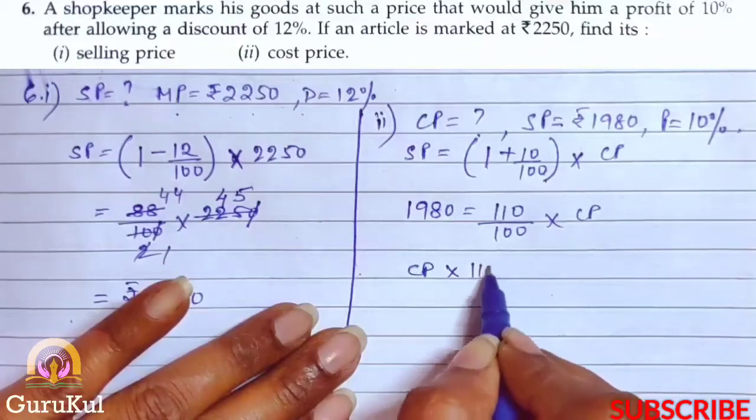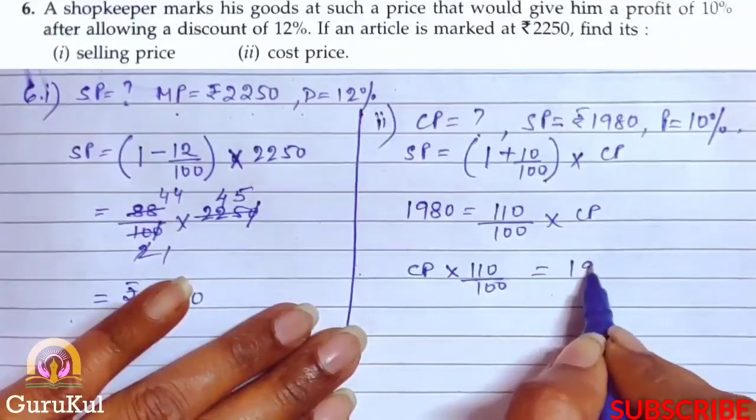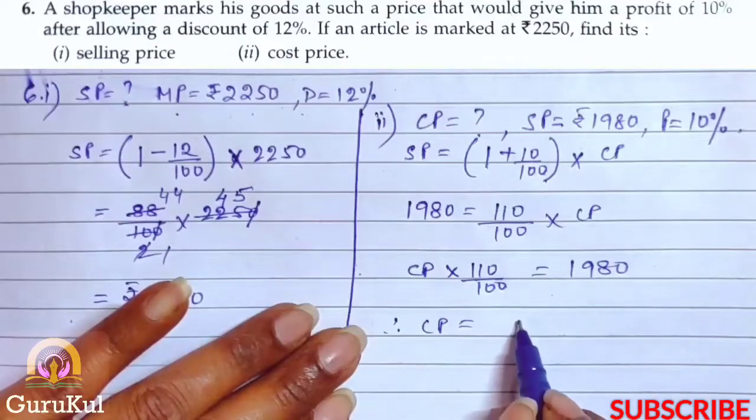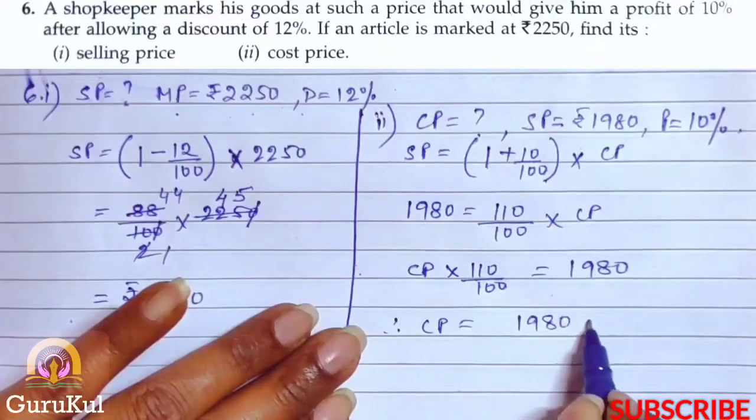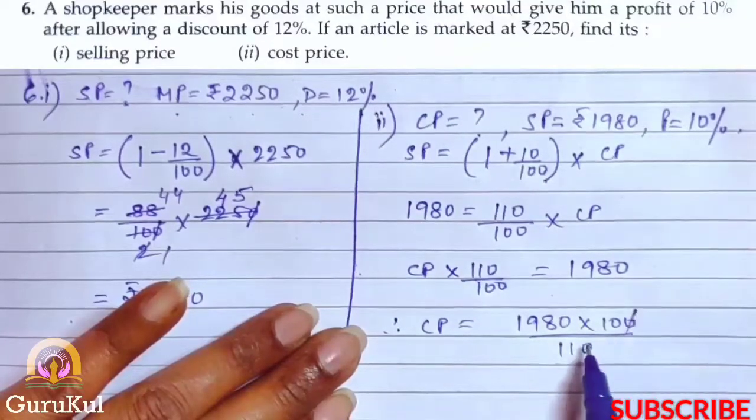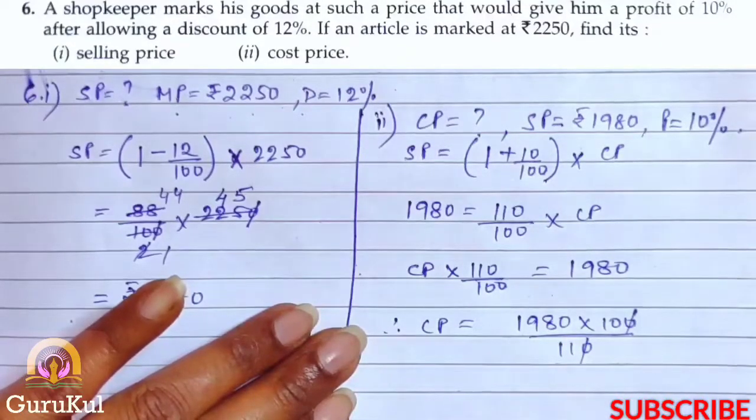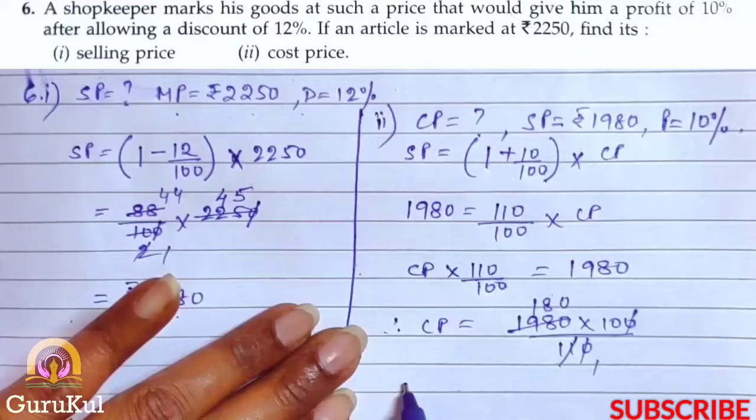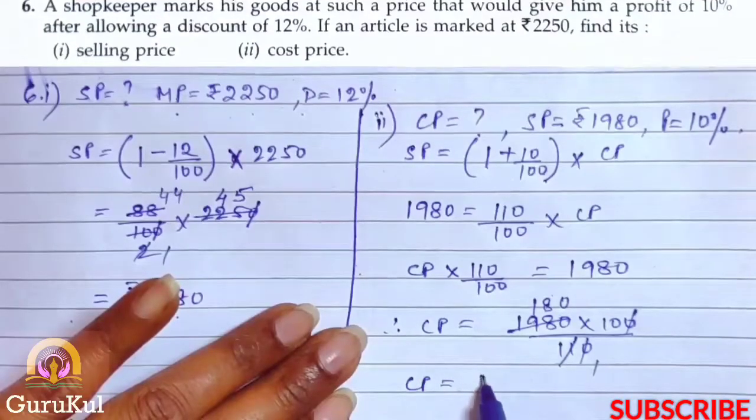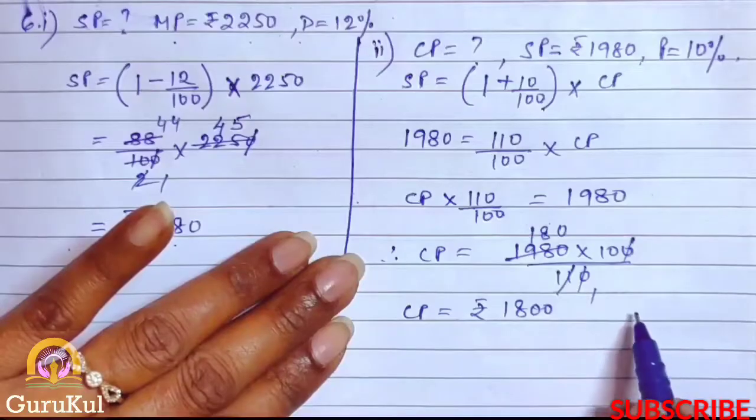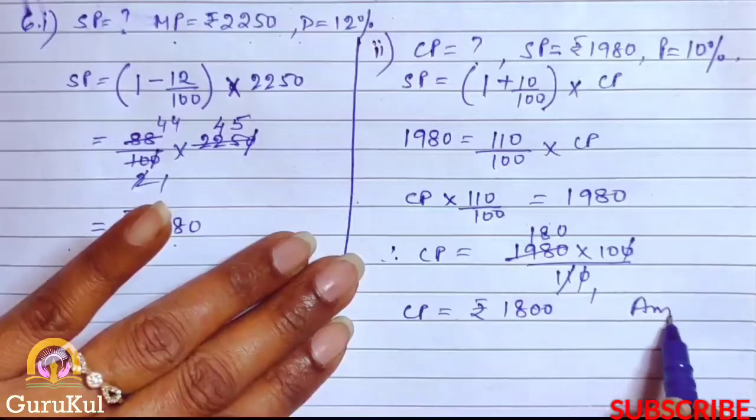Same formula again. SP equals 1 plus 10 by 100 into cost price. So CP into 110 by 100 equals 1980. Therefore cost price equals 1980 into 100 by 110. This gives us cost price of rupees 1800. And here we have the answer.